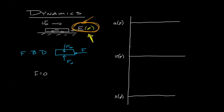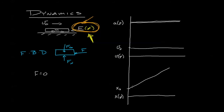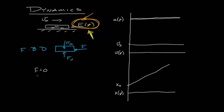Let's draw that out. Our velocity starts at V0 and it's not going to increase — it's going to go nice and steady. Our acceleration is going to stay right at zero. And finally, our position is going to start off at X0 and increase at some slope based on V0.